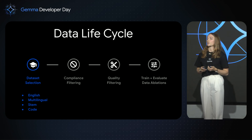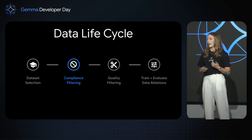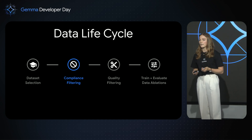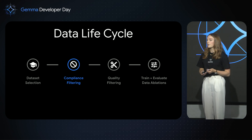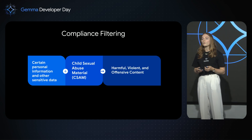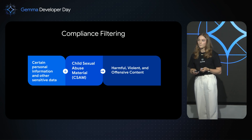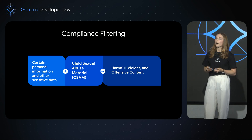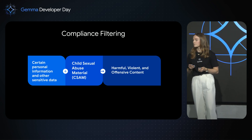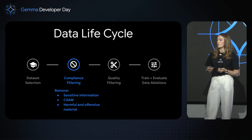Once we've selected a dataset, we need to make sure we're ready to train on it, and the first thing we do is compliance filtering. Gemma is an open source model, meaning we give end users full capabilities to do whatever they want with Gemma. We need to make sure we train on safe data to reduce the risk of our models outputting harmful or offensive content. We extensively filter our training data to remove personally identifiable information, sensitive information, and child sexual abuse material. We're looking to remove harmful, violent, and offensive content to ensure end users have a positive experience developing on top of Gemma.